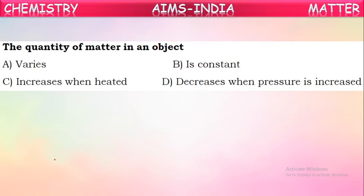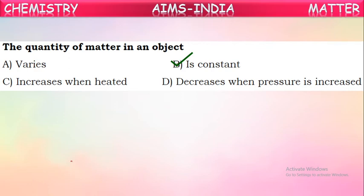Question 2: The quantity of matter in an object. Whatever the state of matter, the quantity — or mass — will always be fixed. If we change the shape or the state, the mass remains constant. For example, 1 kg of ice converts into liquid water, but its mass remains 1 kg. If that water converts to vapor, the total mass of vapor is still 1 kg. The mass of matter does not change even when the state changes.